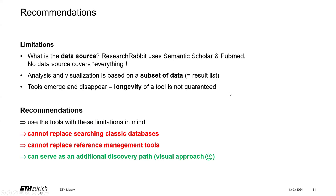Now let's talk about limitations and recommendations. If you use any tool, it's always the question: what is the data source? Research Rabbit uses Semantic Scholar and PubMed. No data source covers everything, so you won't find everything. In Research Rabbit and similar tools, analysis and visualization is based on a subset of data — usually only 50 papers are used to make the network. Also, these kinds of tools emerge and disappear, so don't store your selected articles in them as they might not live forever.